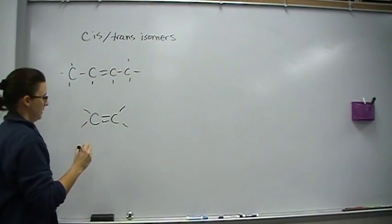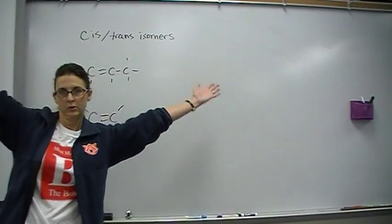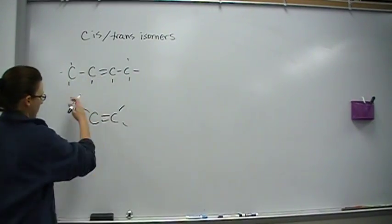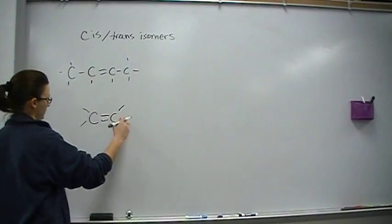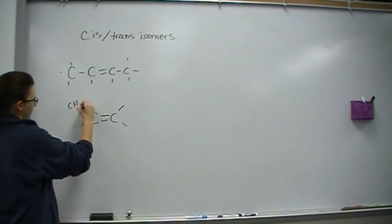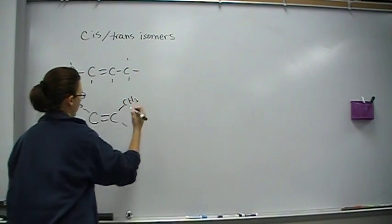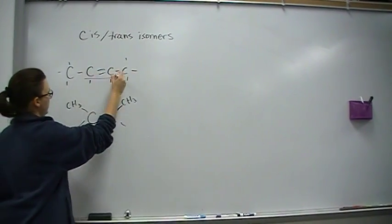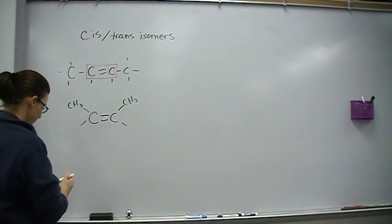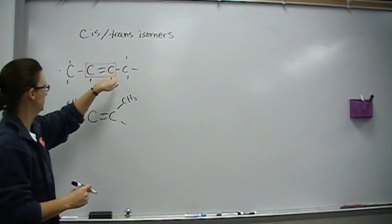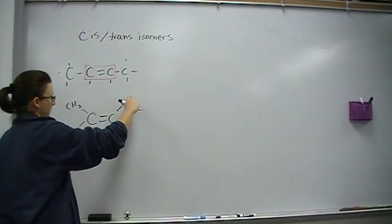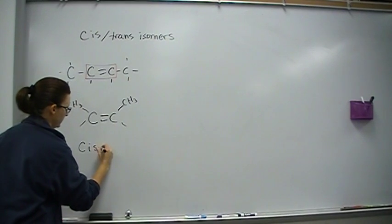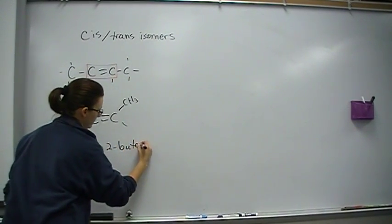You take 2-butene and you draw it. Cheerleader version, that's this. Where these are still H's here, but I'm going to put whatever is on the chain, like this. Sometimes what I do is isolate this guy right here. I say, what's hooked on to here? CH3 and H. CH3 and H. That's what I did here. This right here is called cis 2-butene.